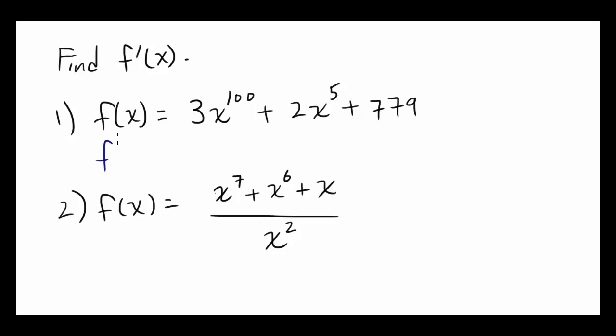What's going to be the f' of x? Well, you're going to bring this 100 down, multiply it to 3, and you're going to have 300, and subtract 1 from the 100th power, you're going to have 99th power. You're going to keep the plus.